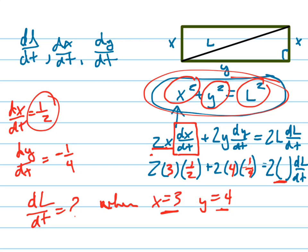Now I can find L because x, y, and L are related by the Pythagorean theorem. That's going to be 5, right? It's a 3-4-5 triangle, and then solve your equation for DL/DT.